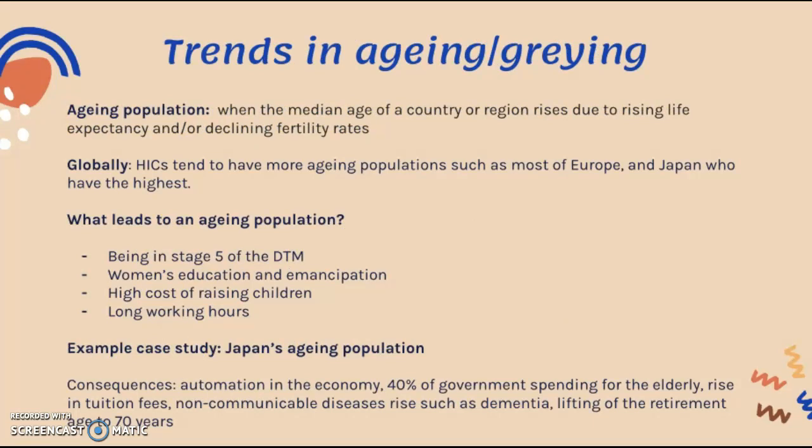Finally, trends in aging. An aging population is when the median age of a country or region rises due to rising life expectancy and/or declining fertility rates. Globally, high-income countries tend to have more aging populations, such as most of Europe and Japan.